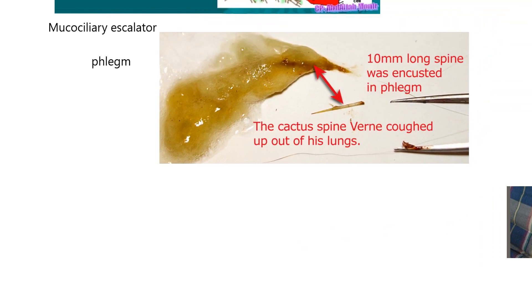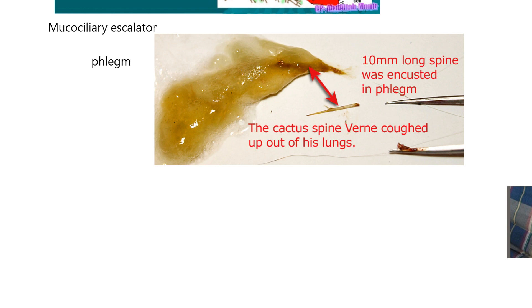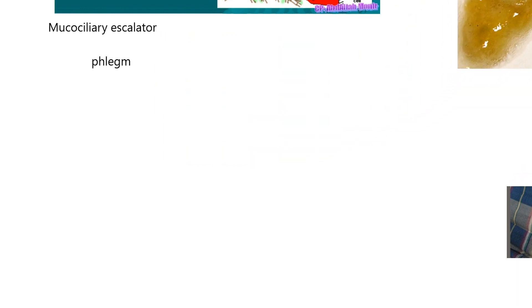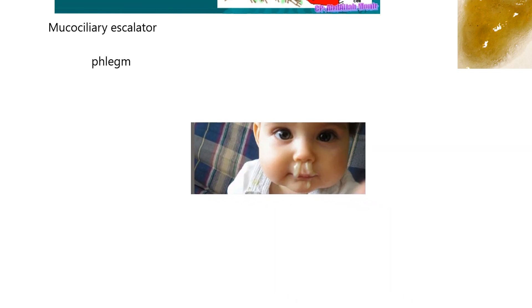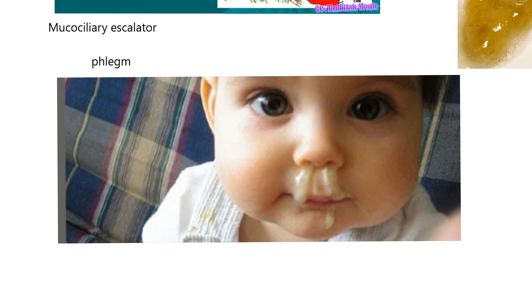So that's phlegm. Now I want to make sure you don't get phlegm mixed up with something else. Here's a picture - this is not phlegm. This is coming from the nasal cavities, and most of us would call this snot. So I just want to make sure you don't call this phlegm, because phlegm is going to come from the bronchioles and so forth. You might label this a bilateral river of snot.